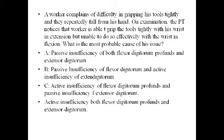That's how the concept of active and passive insufficiency works. Back to the question: a worker complains of difficulty gripping tools tightly and they repeatedly fall from the hand. The patient has wrist flexor weakness. On examination, the worker is able to grip tools tightly with wrist extension, but unable to do so effectively with wrist flexion. Option B: passive insufficiency of flexor digitorum and active insufficiency of extensor digitorum. Option C: active insufficiency of flexor digitorum profundus and passive insufficiency of extensor digitorum.